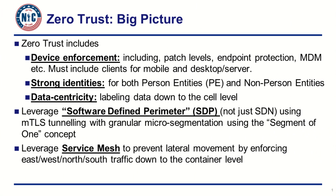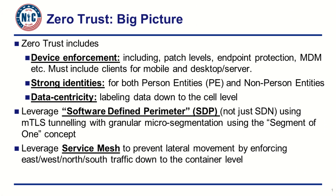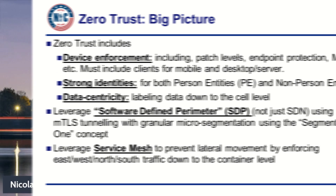The second pillar is about the identity of the user — whether it's a person entity or non-person entity, meaning a person or a computer. We're able to use certificates for non-person entities, and multi-factor authentication for users. The third pillar is about data centricity — data will be labeled down to the cell level, and the user will be matched with labels to define who gets access to what data.